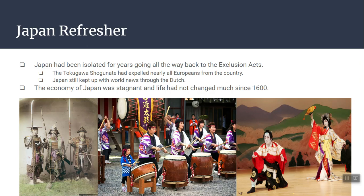Now for Japan. A quick reminder — Japan had been isolated for years going back to the exclusion acts discussed earlier. The Tokugawa Shogunate expelled all Europeans. They still traded with the Dutch in Nagasaki; Portuguese were expressly forbidden and Christian missionaries were killed on sight. The economy, the people, life hadn't changed for about 200 years. Traditional samurai, taiko drums, and kabuki theater — these things hadn't changed in over 200 years. Time stood still in Japan.